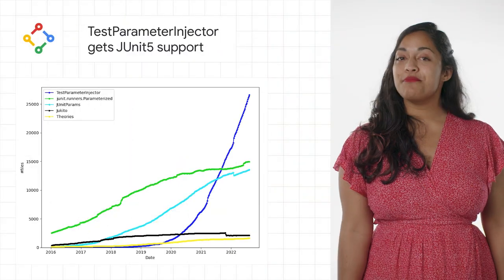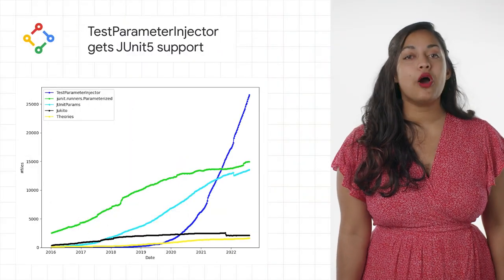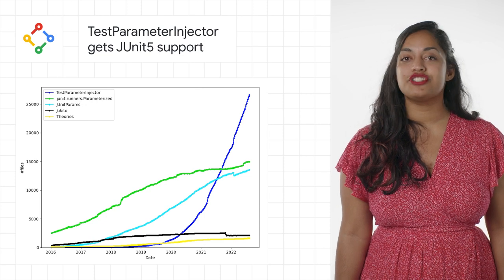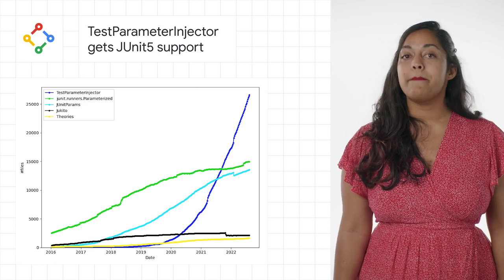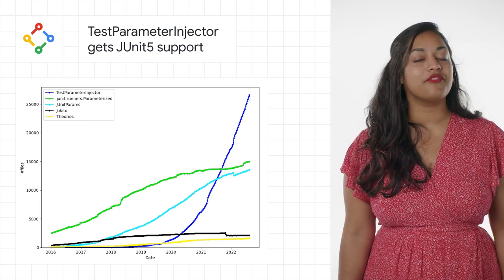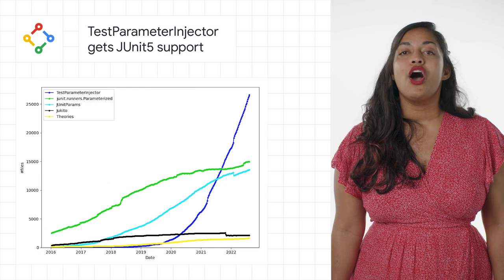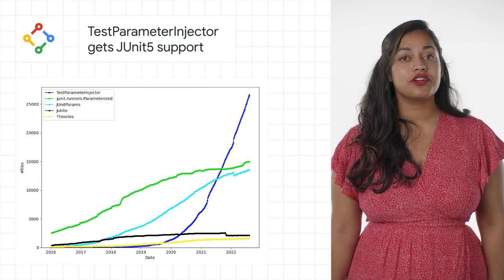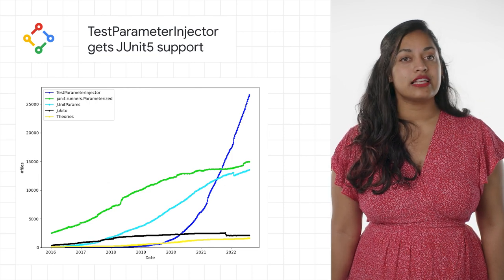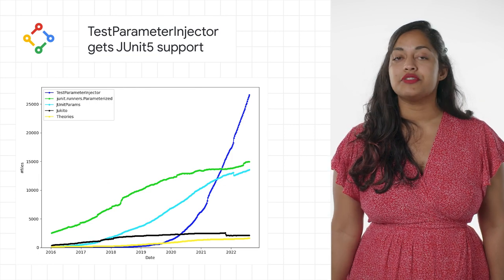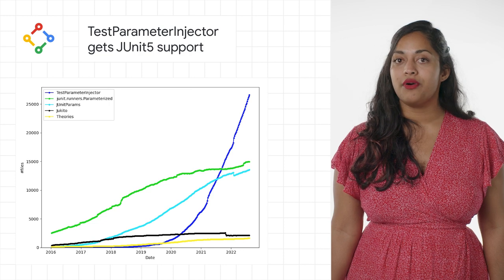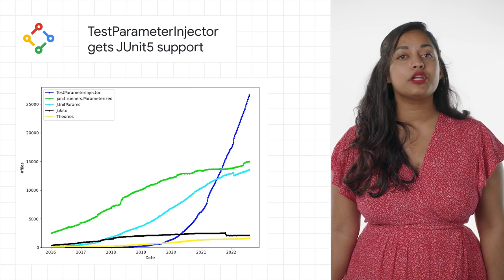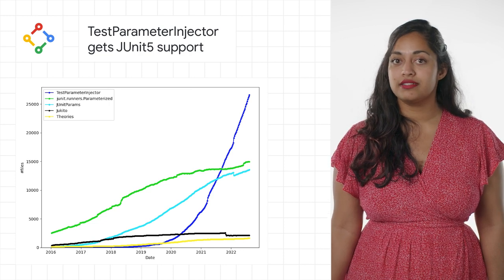In March 2021, we announced the open-source release of Test Parameter Injector, a parametrized test runner for JUnit 4. Over a year later, the Google internal usage of Test Parameter Injector has continued to rapidly grow and is now by far the most popular parametrized test framework.